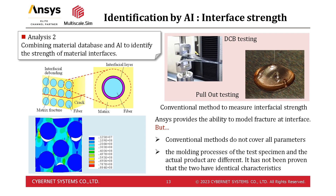Several methods have been proposed to determine the strength between fiber and resin. For example, the pull-out test, in which a single fiber is embedded in resin and pulled out with a robotic arm. These methods unfortunately have fatal problems. For one thing, they do not measure all the material parameters required for analysis — the analysis requires strength in both the normal and tangential directions of the material interface, but it is difficult to measure them separately. For another, the resin made for testing has a distinctly different molding history from the actual composite, so it is questionable whether these results can be applied to actual composite problems.